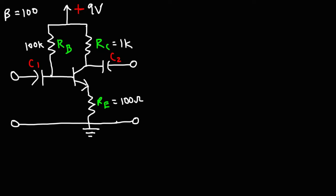In this video, we're going to talk about how to calculate the voltage gain of this NPN transistor amplifier. Here's the formula that we need to calculate it. The voltage gain is equal to the AC collector resistance divided by the sum of the AC emitter resistance and the emitter resistor, capital RE.